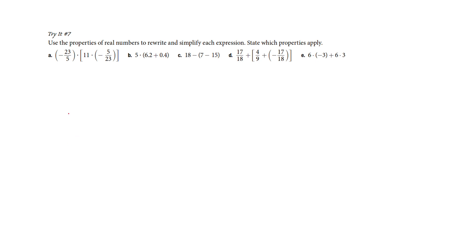Take a look at the first one here — I've got three things being multiplied together. If I change the order and multiply these guys first, because they're inverses of each other, they're going to become 1. So then I've got 1 times 11, which is 11. The next one was intended to be the distributive property where 5 would go there and there, but I don't think that's particularly helpful here. In this context, I would just do 5 times 6.6, which would be much easier.